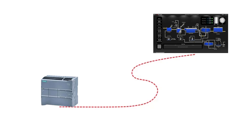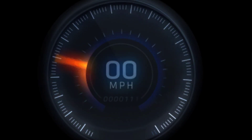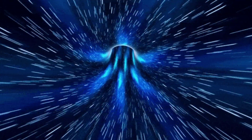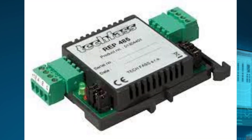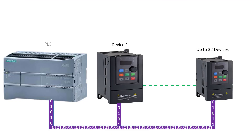If your cable length increases beyond that, your speed will decrease — dropping to just 90 kilobits per second at the maximum distance of 1200 meters. If your distance goes beyond 1200 meters, you can use a repeater for RS-485 communication. All devices on an RS-485 network have their own unique address.